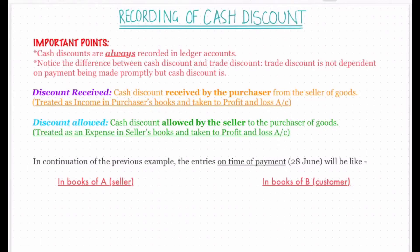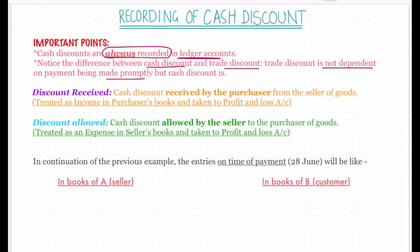Now, the recording of cash discount. Some important points: first, cash discounts are always recorded in the ledger accounts. Second, notice the difference between cash discount and trade discount — trade discount is only applicable if the seller and buyer are in the same line of business, and trade discount is not dependent on payment being made promptly, but cash discount is.